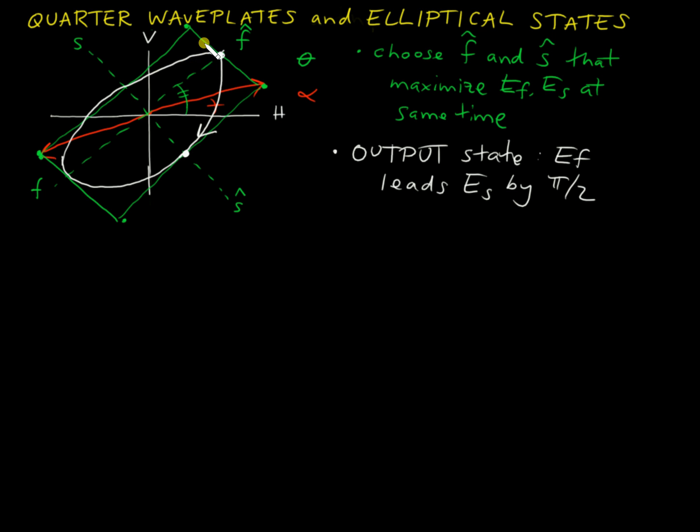If we were to write down now the properties of the output state, we would say, first of all, that there's a handedness. In other words, is it clockwise or counterclockwise? And because we chose our analysis points that were initially in phase and then realized that the F component will lead the S component, we know that this particular one is going to be clockwise.